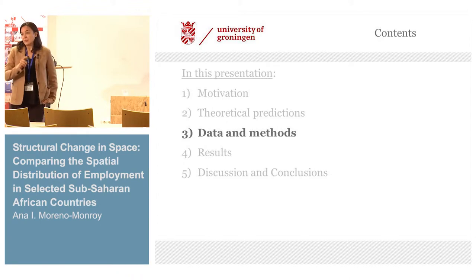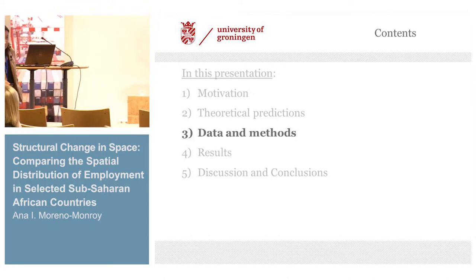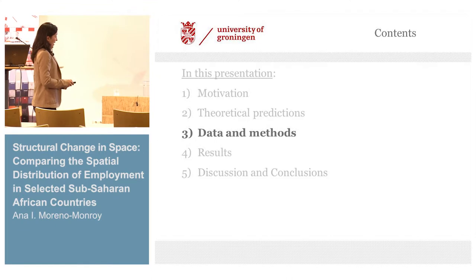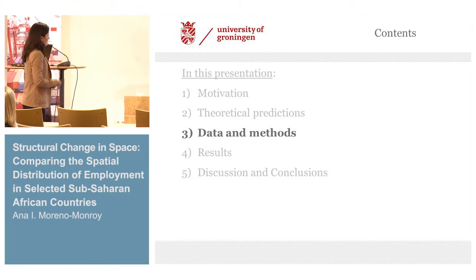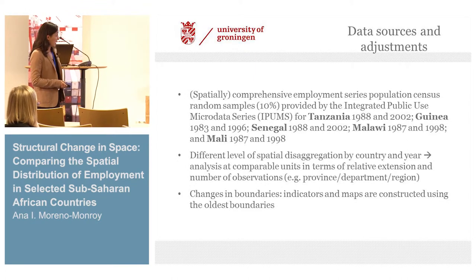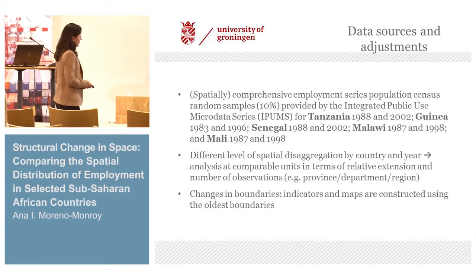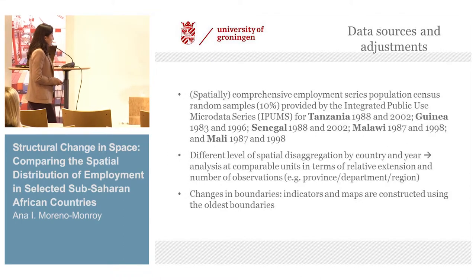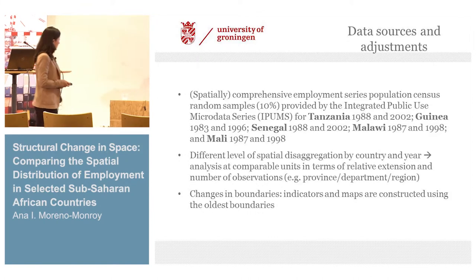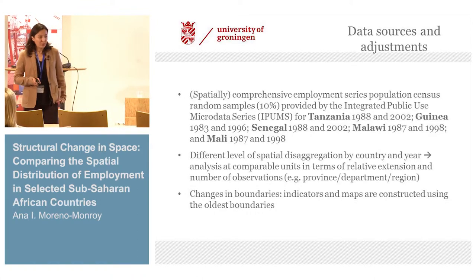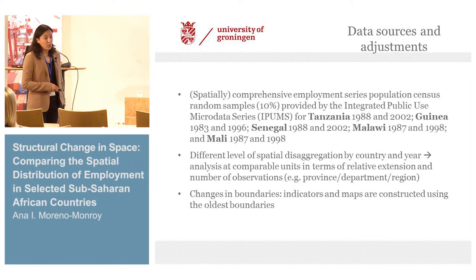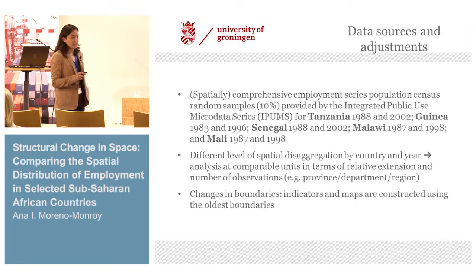Now for the data and methods — this is more a comparative exercise, so I use available data and standard methods. I used population census samples provided by IPUMS for five countries: Tanzania (1988–2002), Guinea (1993–1996), Senegal (1988–2002), Malawi (1987–98), and Mali (1987–98). This sample was chosen because these are all the IPUMS-listed countries that have at least two census data points and the variables needed for the analysis.